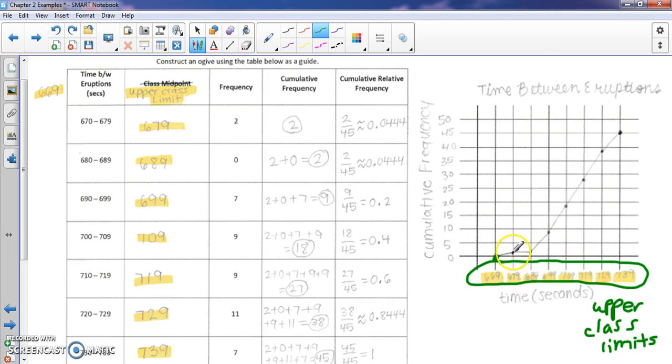So then I'm going to plot points at each of my cumulative frequencies for the classes. These are upper class limits, and then I'm just going to connect the dots there. So you notice that these are always in ascending order there, smallest to larger. So keep that in mind.